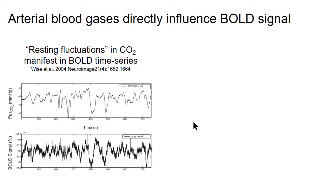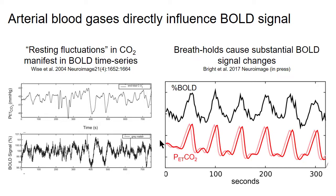Arterial blood gases can also directly influence the BOLD signal irrespective of oxygen metabolism. Resting fluctuations in CO2 — a potent vasodilator — caused by changes in breathing will manifest in your BOLD signal. A breath-hold study demonstrates a large CO2 increase that dominates the BOLD time series. If a participant holds their breath for even a second or two during a difficult task like working memory, you need to account for what this does to your BOLD signal.